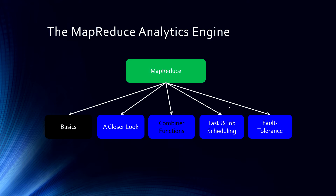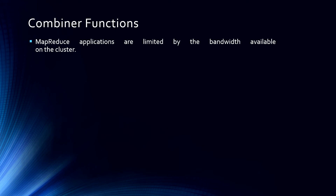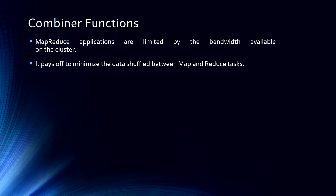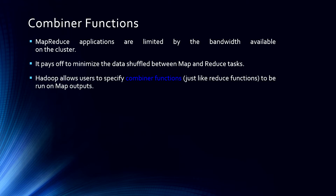So what essentially is a combiner? We have been discussing about MapReduce applications which are limited by the bandwidth available on the cluster. We also talked about the different bandwidth on different racks — racks placed on closer nodes like node 1 and node 2 will have a higher bandwidth, while racks far away from each other will have a lower bandwidth. So it pays off to minimize the data shuffle between MapReduce tasks, and Hadoop allows users to specify combiner functions, just like reduce functions, to run on map outputs.